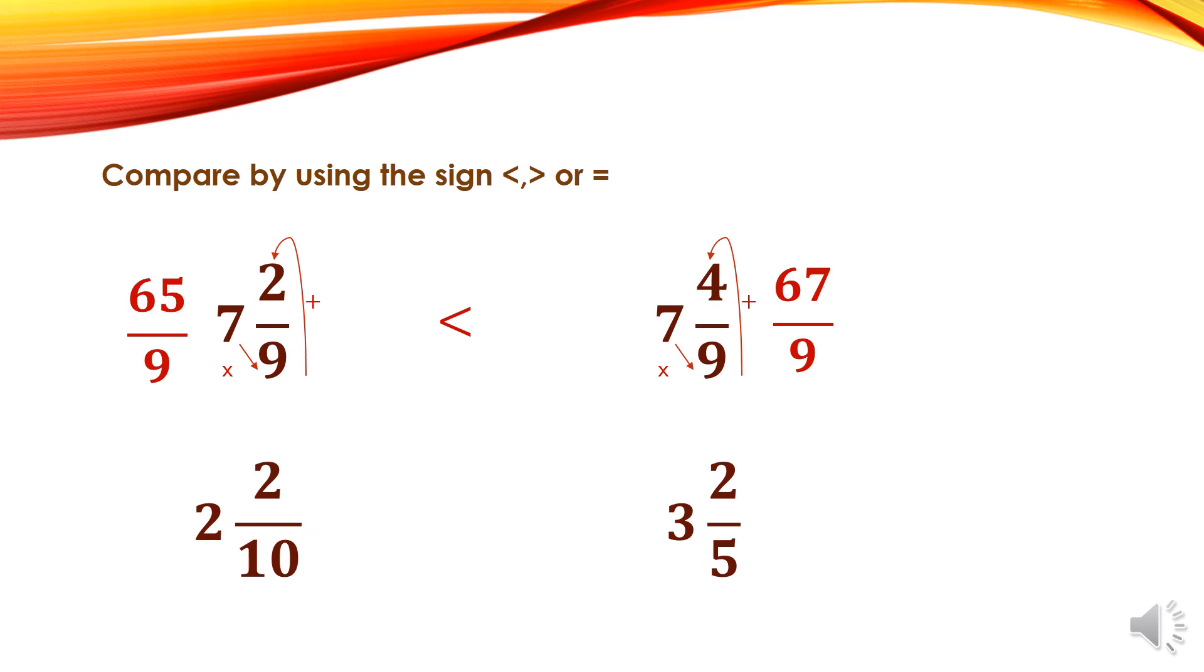Another example: 2 and 2 over 10, 3 and 2 over 5. First of all, we have to transform the two mixed numbers to fractions. 2 times 10 plus 2 equals 22 over 10. Then the second one, 3 times 5 plus 2 equals 17 over 5.